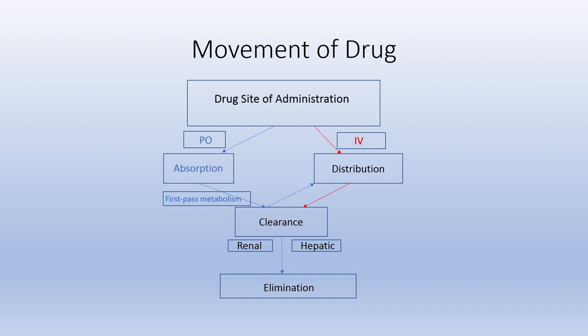So what we are talking about overall is the drug side of administration. On the left in the blue is oral or PO administration, which undergoes absorption. In some cases, first-pass metabolism, clearance through the liver, distribution through the body, clearance again through renal and hepatic mechanisms, and elimination. Drug can also be administered intravascularly, where it undergoes distribution, then clearance effects through renal and hepatic mechanisms, and elimination from the body.